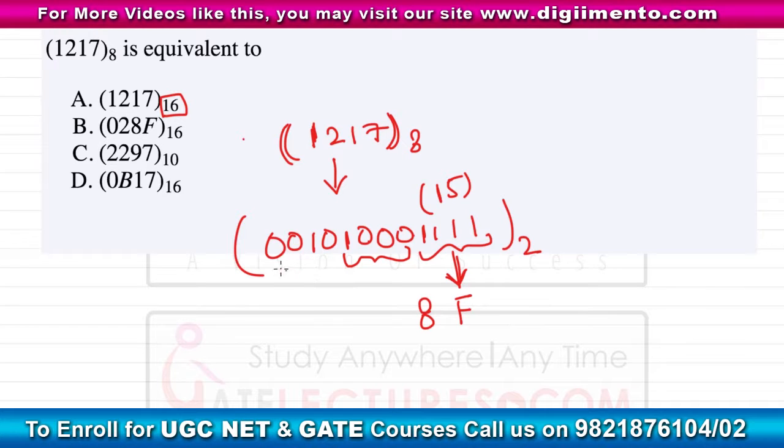Now this is 0010 in decimal which is 2, and in hexadecimal also this will be same as 2. So 28F, this will be the right hexadecimal equivalent of this octal number. So 028F, this is the answer here.